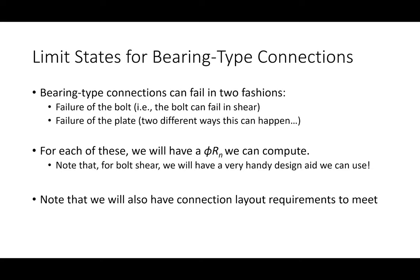With bearing type connections, we really only have two limit states to assess. Bearing type connections do not account for friction, so we either have failure of the bolt — meaning the bolt will fail in shear — or failure of the plate. For the plate, there are two different ways that can happen. For each of these we'll have a design resistance we can compute, and for bolt shear we're going to have a very handy design aid in the manual. This is going to be our very first excursion into using design aids.